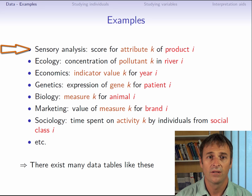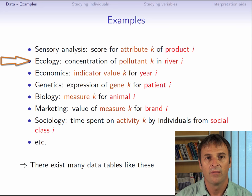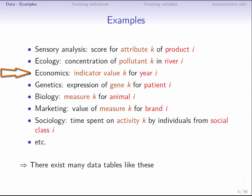So the aim of PCA is to study this data table. Here is an example from ecology, where individuals are rivers, and variables are different pollutants. So we end up with a data table with rivers in rows and pollutants in the columns. In economics, we might have years in the rows and economic indicators in the columns. We can then track the evolution of economic indicators through the years. Instead of years for rows, it could be countries, if we want to compare the economic situation of several countries.